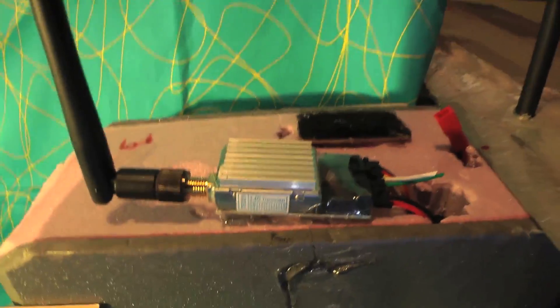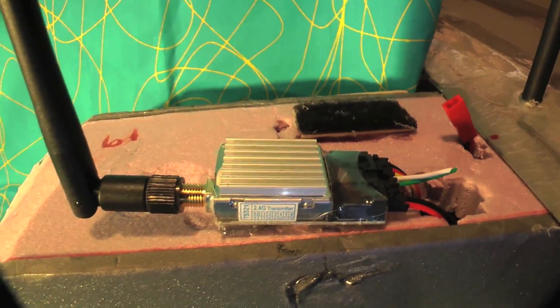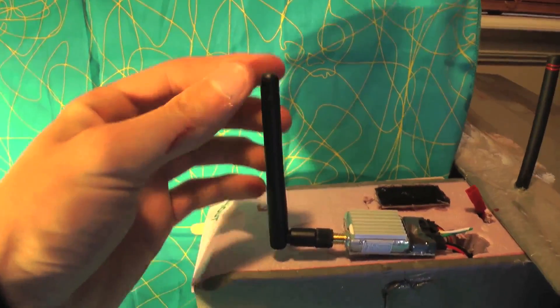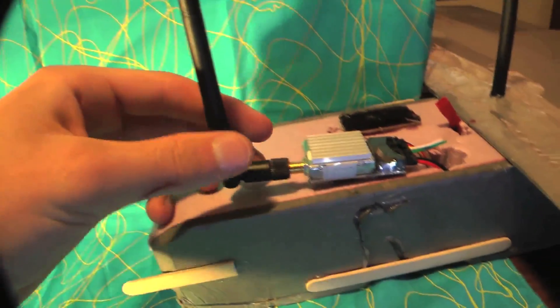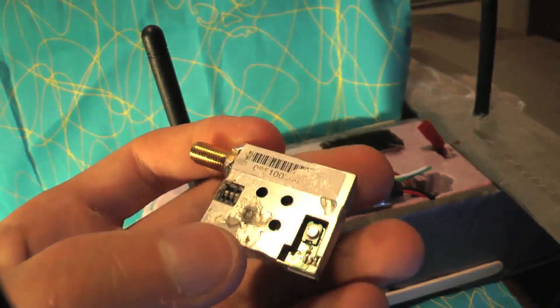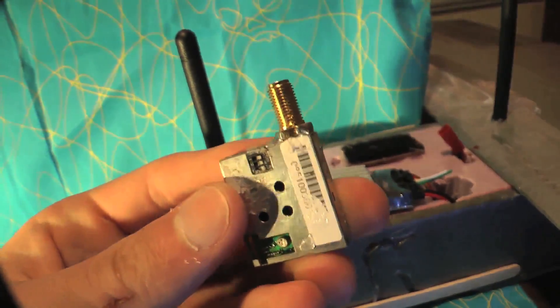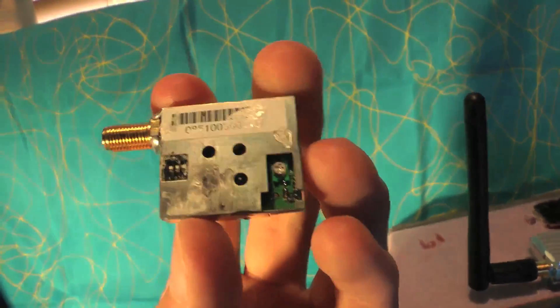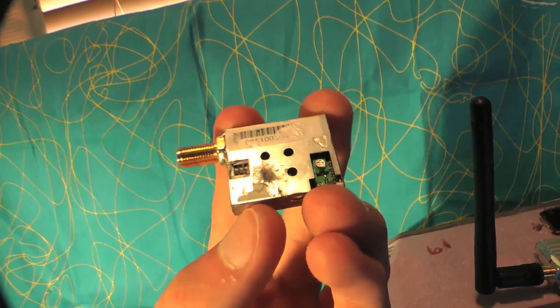Now moving on to the transmitter. 500mW, as I already said. It also comes with the same 3dbi omni-directional antenna. This is the transmitter. It's a little more bulky than some of the LaMate transmitters that are also 500mW, but I've managed to break two of these in the past two months.